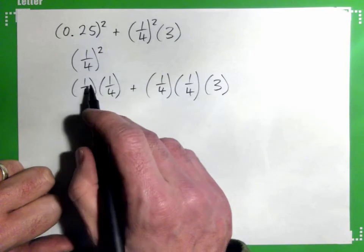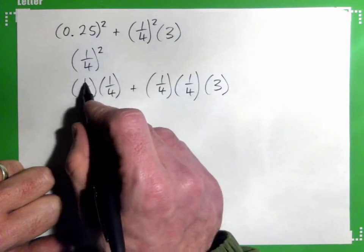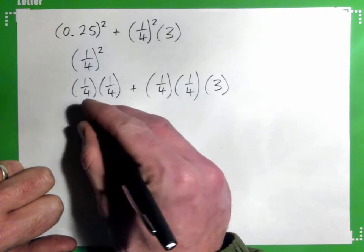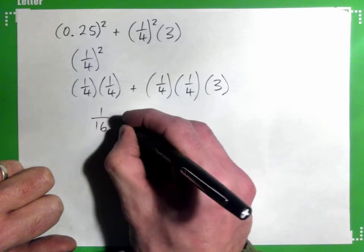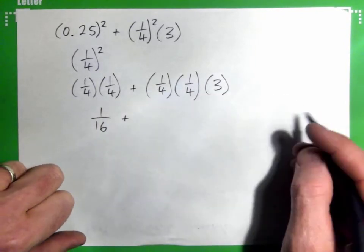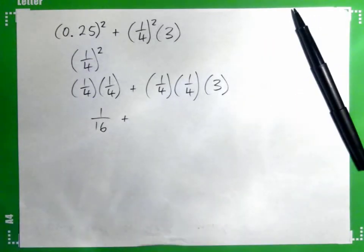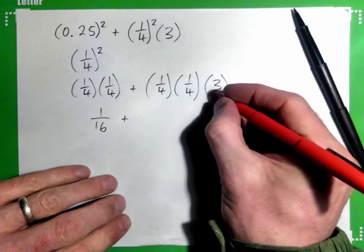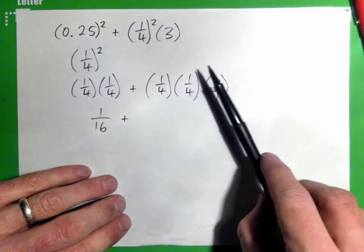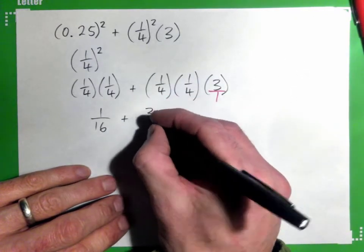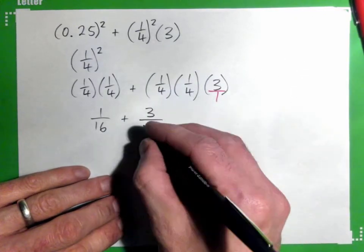So, 1 times 1 is 1, 4 times 4 is 16, and then we have this. How can I write the 3 as a fraction? Lovely. Right. So, I have 1 times 1 times 3, which is 3 on the top, and on the bottom, 4 times 4 times 1, which is 16. Okay?